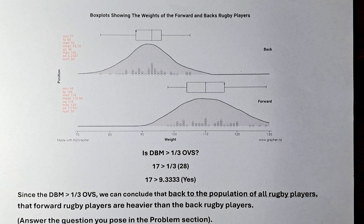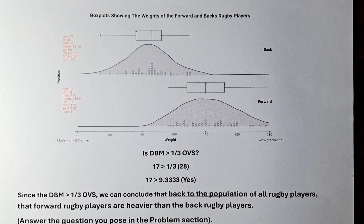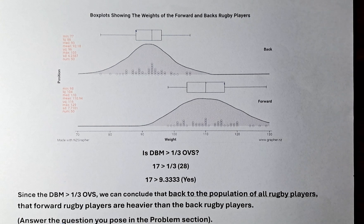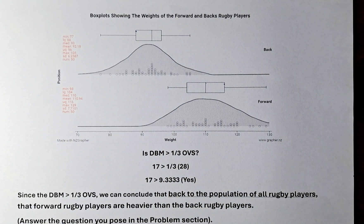Always answer the question you posed at the start of the problem. Before we end, we can also contribute to the conclusion by saying that the forward rugby players have a bigger mean and median, and that's why they are heavier. We can also say that the IQR of the forward rugby players is shifted to the right of the back rugby players, which also shows that the forward rugby players are heavier. And last but not least, there is no overlap between the two IQRs, and this again shows that the forward rugby players are heavier than the back rugby players.